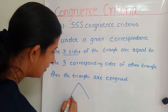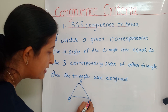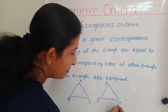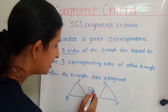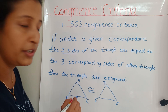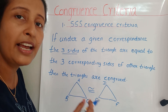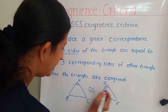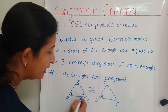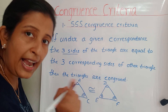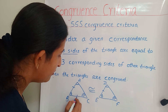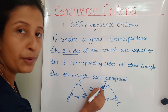Consider two triangles: triangle ABC and triangle DEF. Previously, we would check whether all three sides and three angles are equal — checking if angle A equals angle D, angle B equals angle E, angle C equals angle F, and whether side AB equals DE, side BC equals EF, and side AC equals DF.